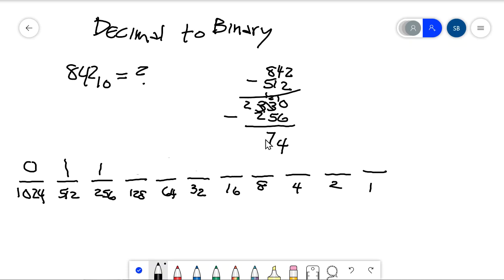So now we're starting the process with 74. I'm running out of room here. So I'm going to write 74 up on the top here so I can subtract some numbers from it. I can't subtract 128.